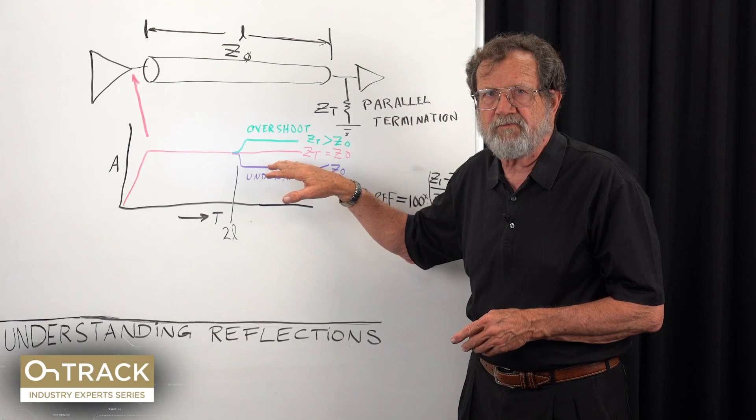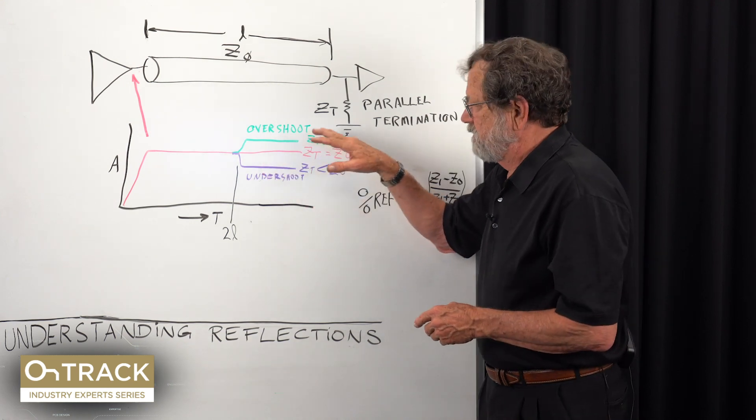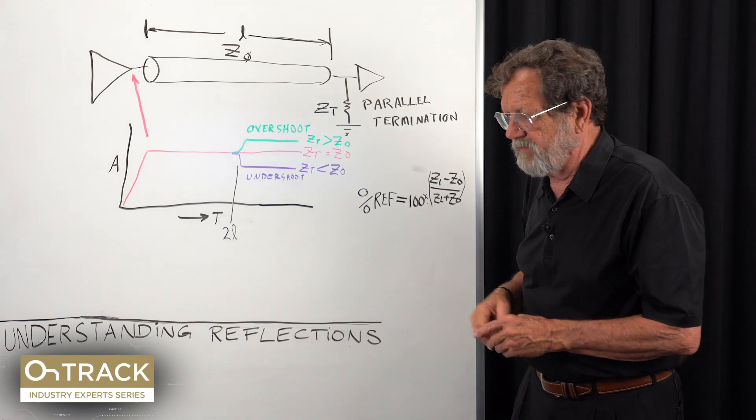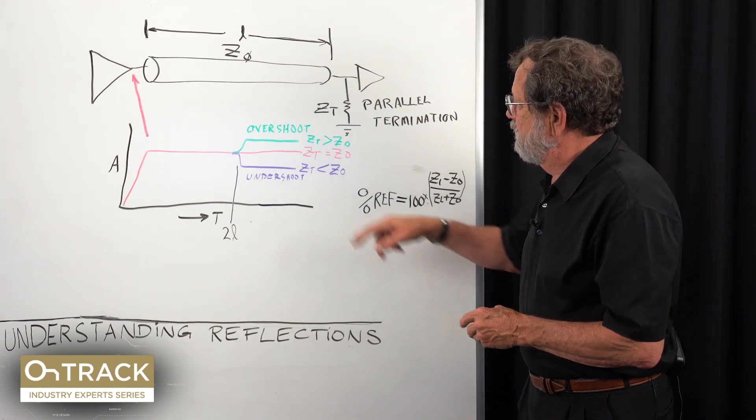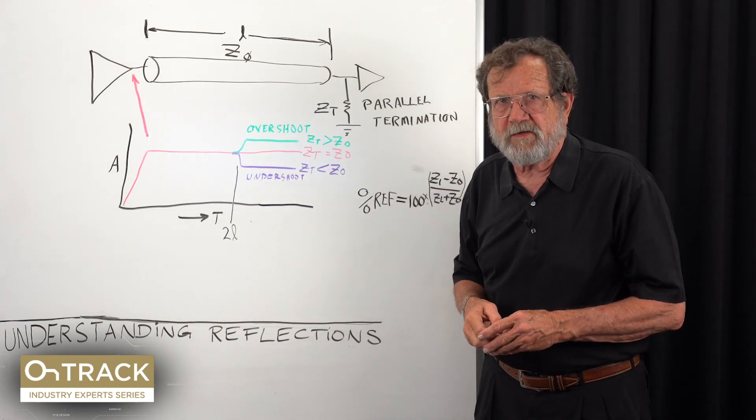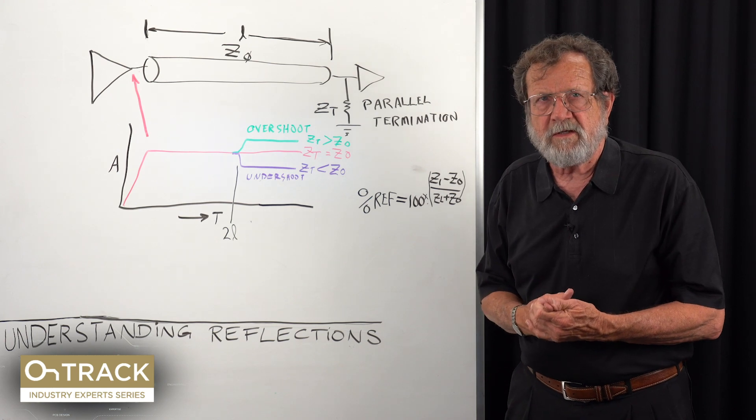Historically, that was the one we worried about because with five volt logic, it was not difficult to get overshoot large enough that it would violate the input voltage rating of the circuits and cause failures.